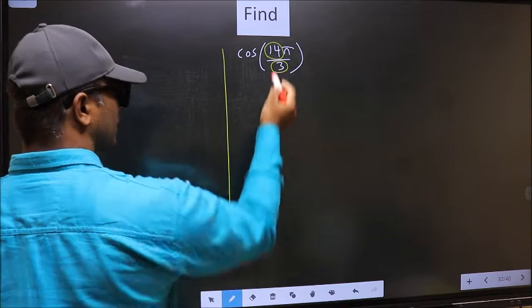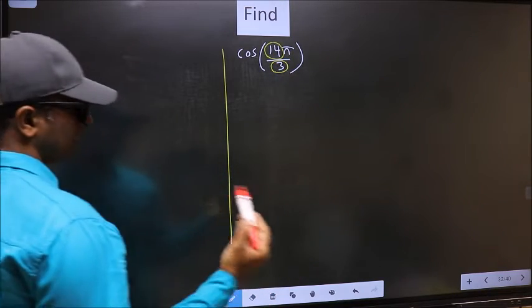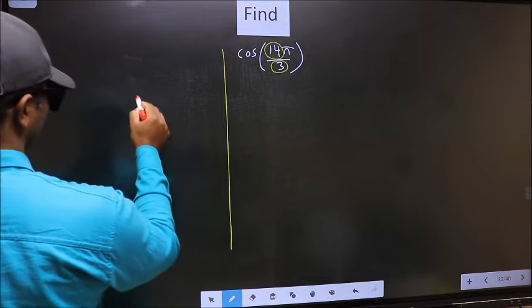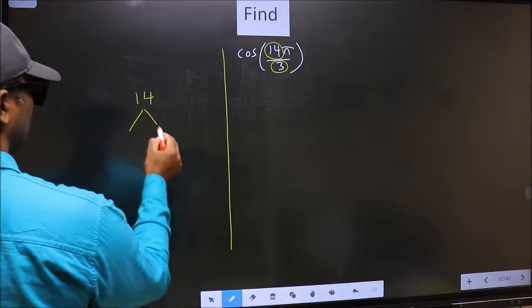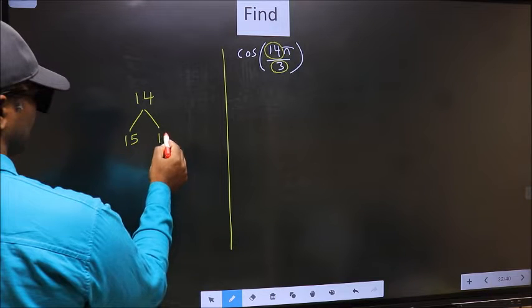Now you should check 14 is close to which multiple of 3. What I mean is 14 and here you write multiples of 3. That is 15, 18.